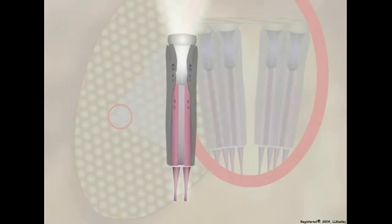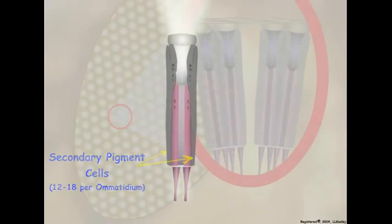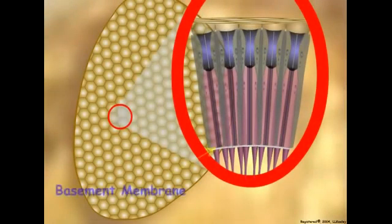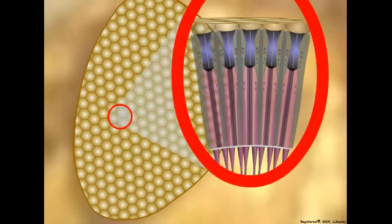Retinula cells are surrounded by 12 to 18 secondary pigment cells so that each ommatidium can be functionally isolated from its neighbors. Ommatidia sit on a basement membrane in the retina, and axons from the retinula cells combine below the membrane to form the optic nerve that leads to the protocerebrum of the insect brain.